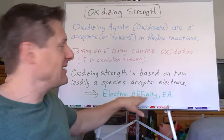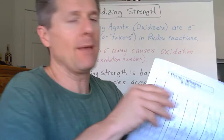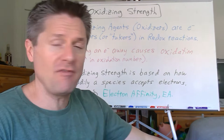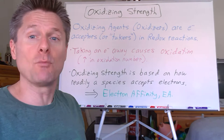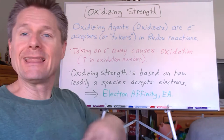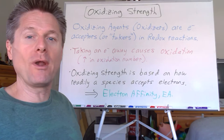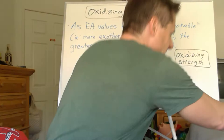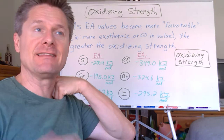Oxidizing strength is based on electron affinity trends. I took a block of the periodic table: sulfur, selenium, and tellurium for the chalcogens, and chlorine, bromine, iodine. Remember, electron affinity can be positive or negative — if it's positive it's not favorable; if it's negative it's more favorable. So the more negative the electron affinity, the more readily it accepts electrons and the stronger the oxidizing agent. We can look at whether oxidizing strength increases going across a row or changes going down a column.